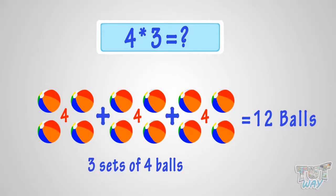That is, four multiplied by three is twelve.